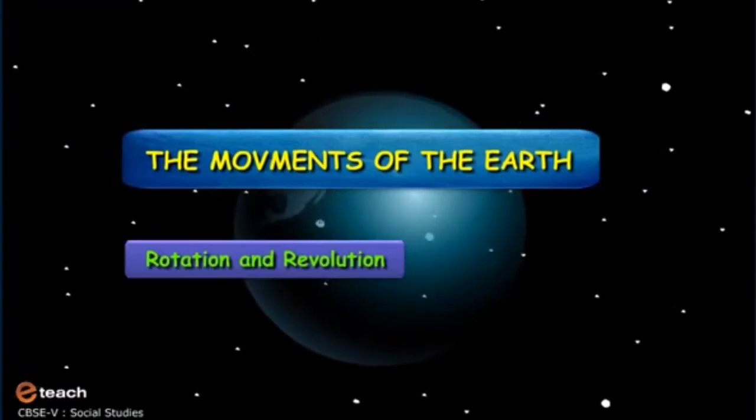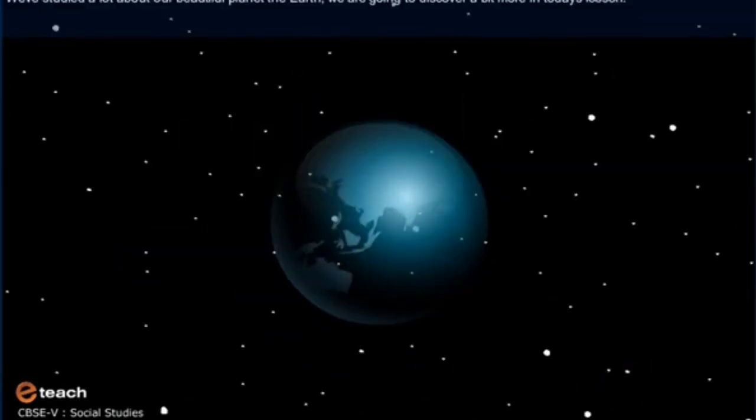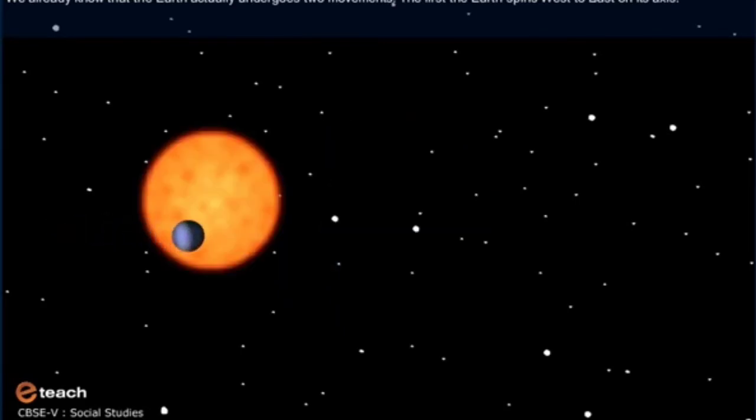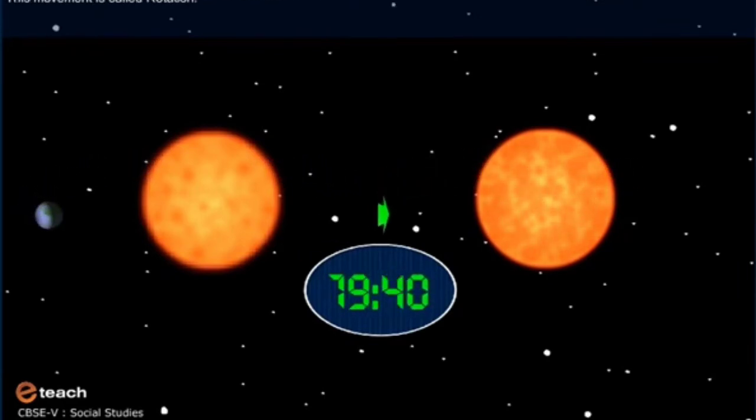The movements of the earth. Rotation and revolution. We've studied a lot about our beautiful planet, the earth. We are going to discover a bit more in today's lesson. We already know that the earth actually undergoes two movements. The first, the earth spins west to east on its axis. To complete one complete spin, the earth takes exactly 24 hours and during which we have day and night. This movement is called rotation.